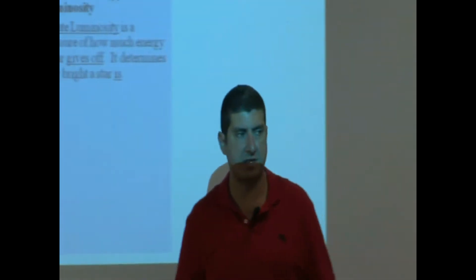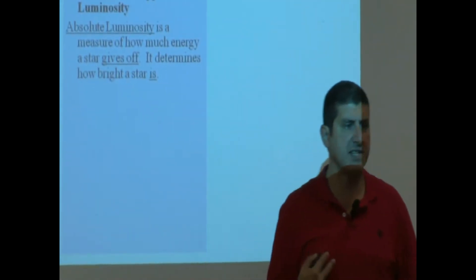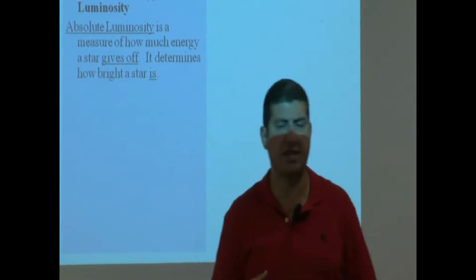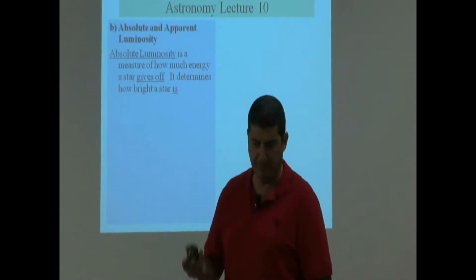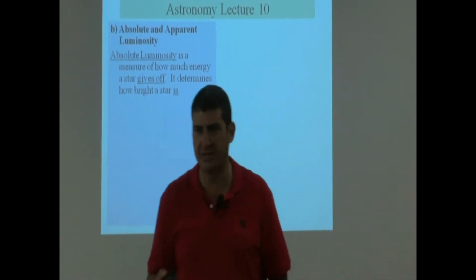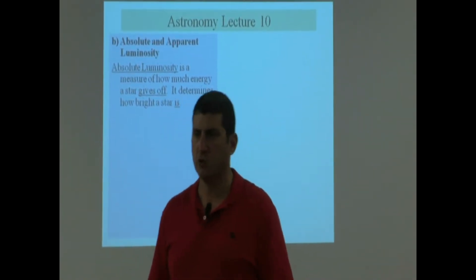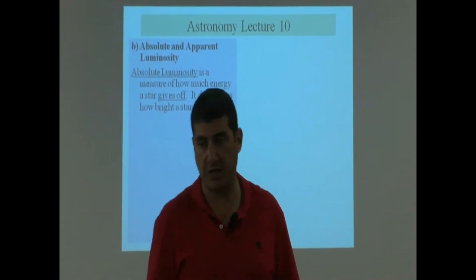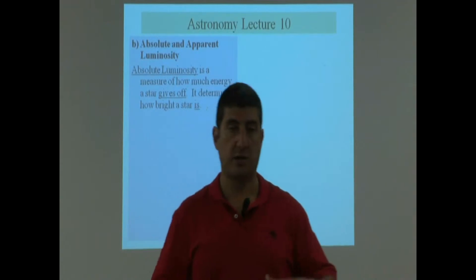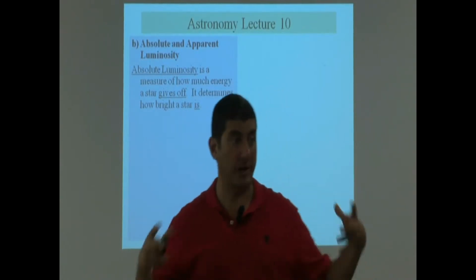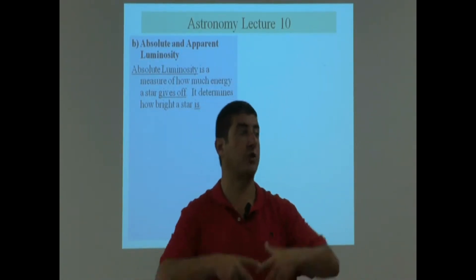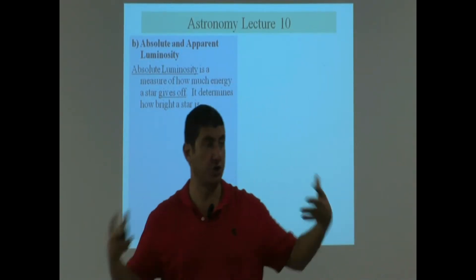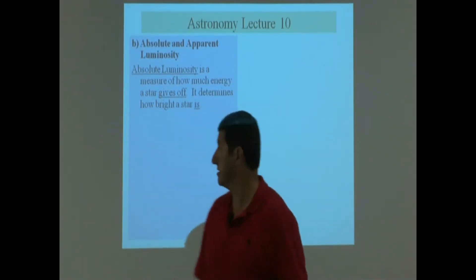Absolute and apparent luminosity. In the last lecture, we noticed that the Sun has something known as luminosity, which planets don't have. This tells you how bright it is, how much energy it emits.